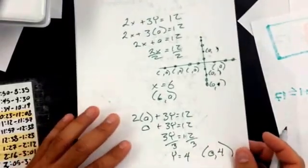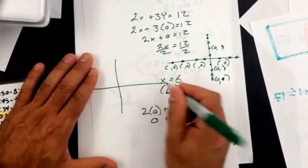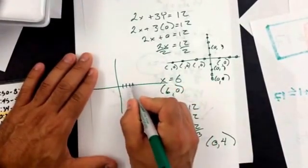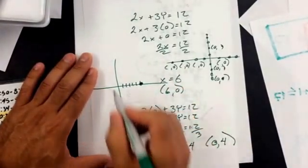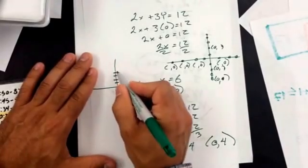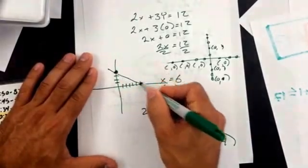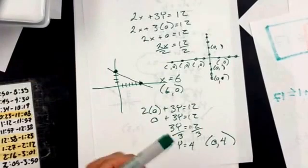So if I want to graph it using these two points, I'm going to go to 6, 0. Make that point. And I'm going to go to 0, 4. Make that point. And connect them. You can always make a line with any two points.